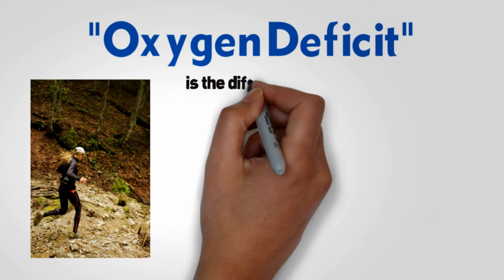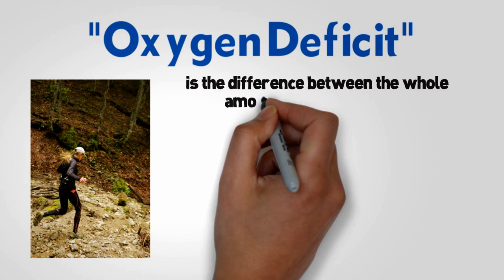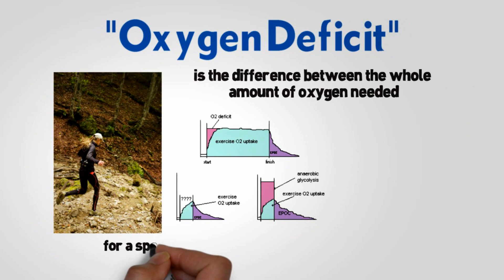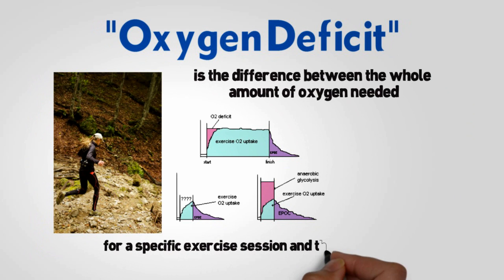Oxygen deficit is the difference between the whole amount of oxygen needed for a specific exercise session and the portion of it that the body intakes during the time of the exercise session.